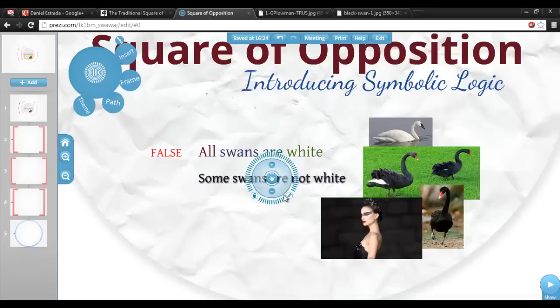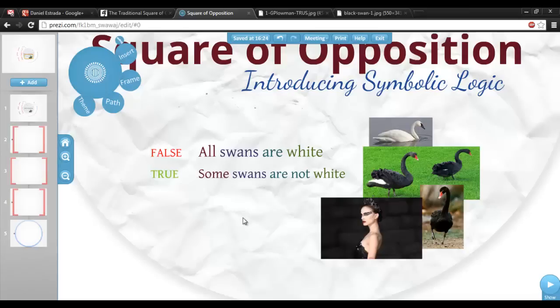Knowing that this sentence is false isn't the end of the story because it immediately tells us that another sentence is true, that some swans are not white. In fact, these two sentences are logical contradictions. If one is false, the other is necessarily true, and vice versa.